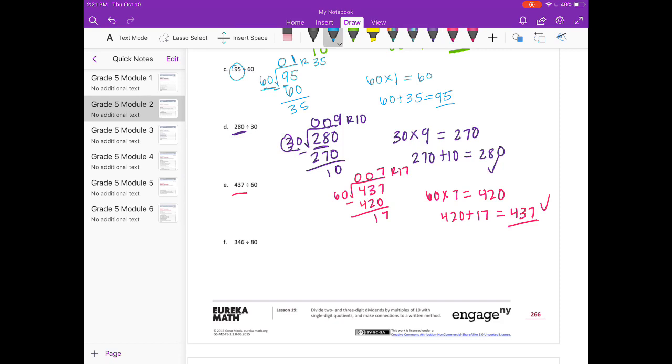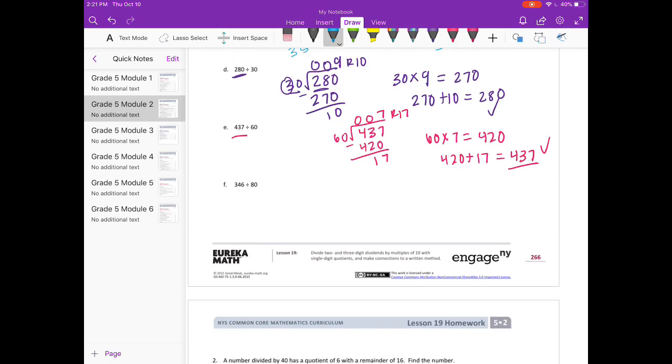And lastly, 346 divided by 80. So 80 can't go into 3. It can't go into 34. But let's think about our math facts. So 80 times 5, that would be too big because that would be 400. So let's try 80 times 4 is 32, 320. So we can go in 4 times 320.